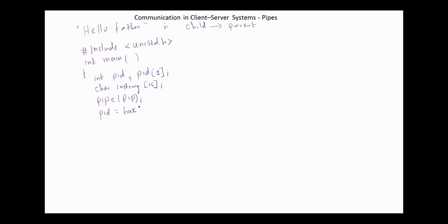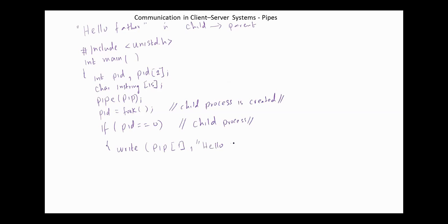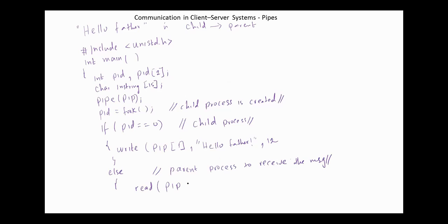fork() is used to create a child process. We check if the PID is zero — then this is the child process. The child process writes the message into the pipe; there are 12 characters. Else if PID is not zero, we have the parent process to receive the message, reading from pipe fd[0], reading 12 characters. You can expand this code to include error checking.